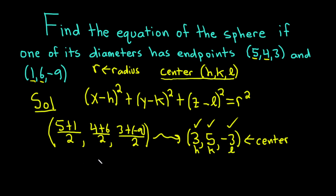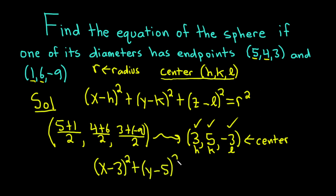Plugging the center into our sphere equation, we get: (x - 3)² + (y - 5)² + (z - (-3))² = r², which simplifies to (x - 3)² + (y - 5)² + (z + 3)² = r².